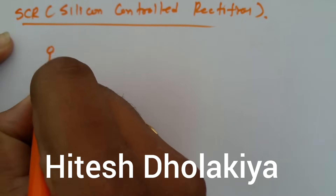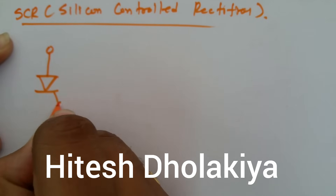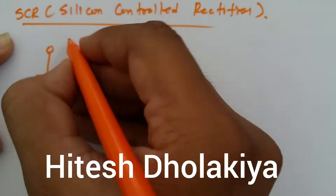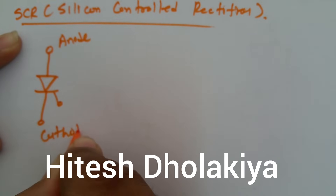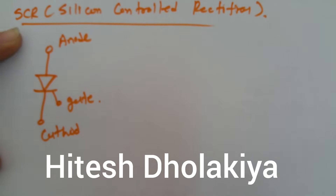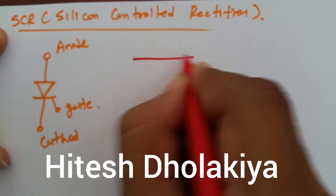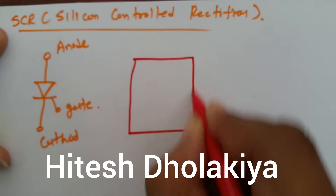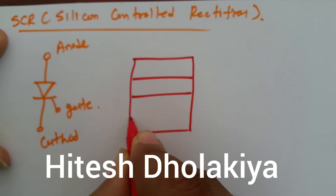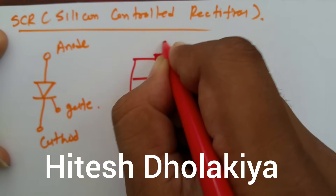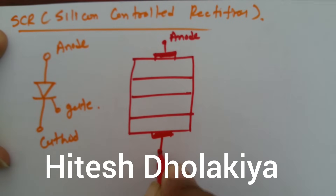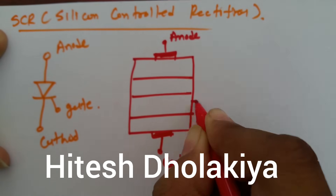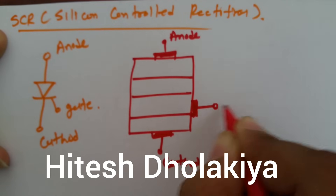If we see its symbol, it is a three-terminal device having three terminals: anode, cathode, and gate. If we see its internal structure, it is having four layers. This is the anode, cathode, and here connecting the gate.